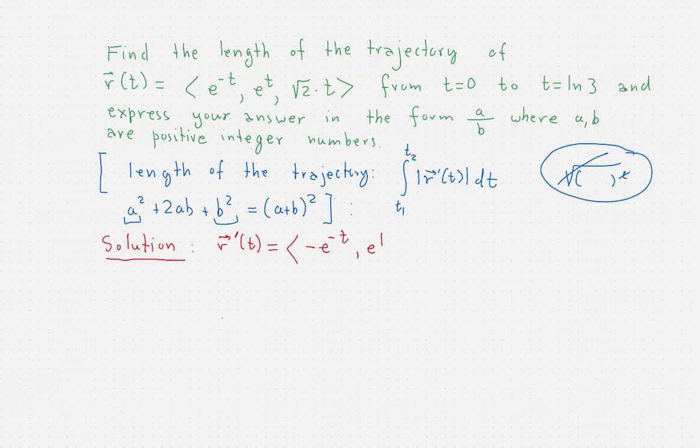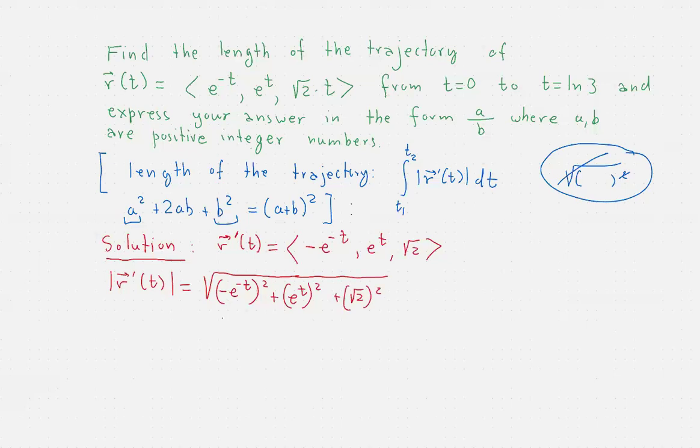And if we take the magnitude of this, so as to find the speed, this will give us (-e^(-t))², plus (e^t)², plus (√2)². And this is where we somehow need to acknowledge terms that look like this.